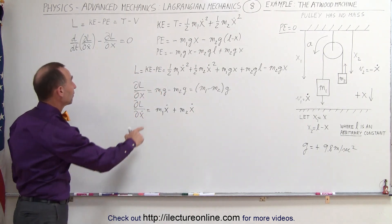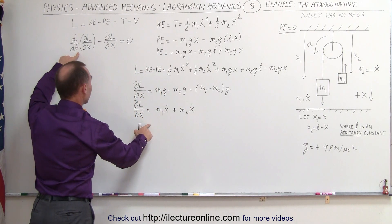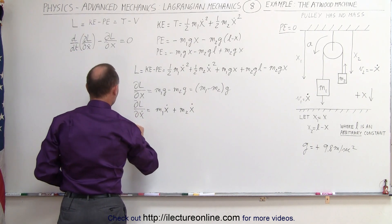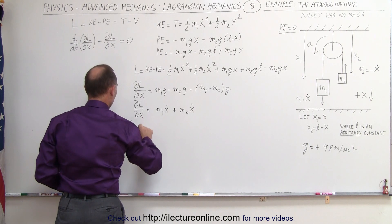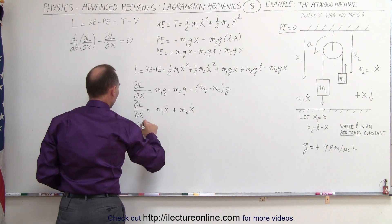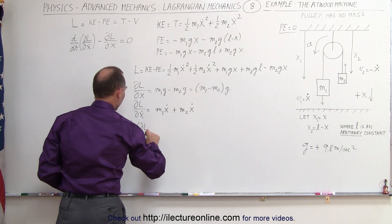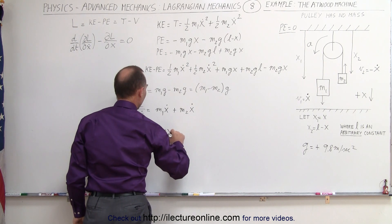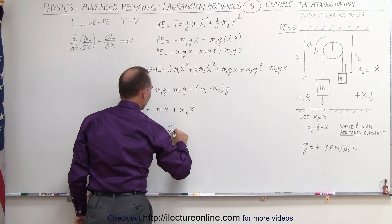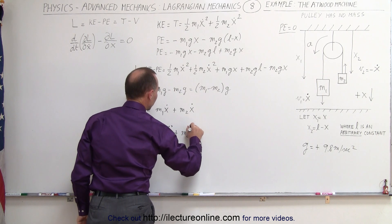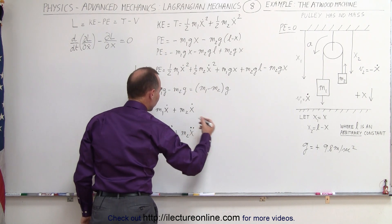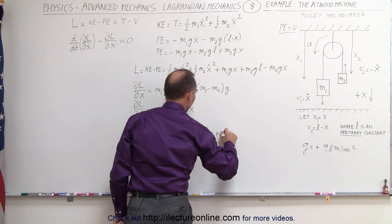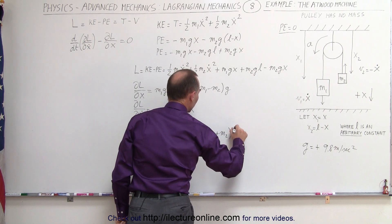Now we take the time derivative of the partial of L with respect to x-dot. So d/dt of the partial of L with respect to x-dot is equal to m1·x-double-dot plus m2·x-double-dot, which we can factor to get (m1 plus m2) times x-double-dot.